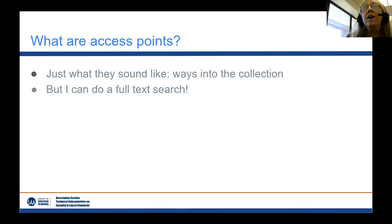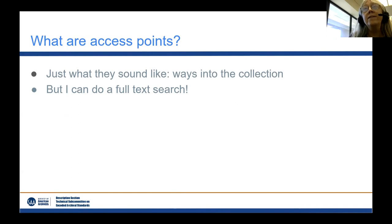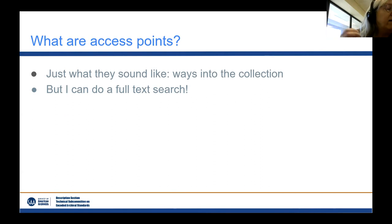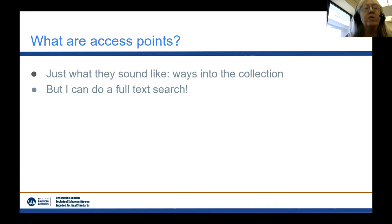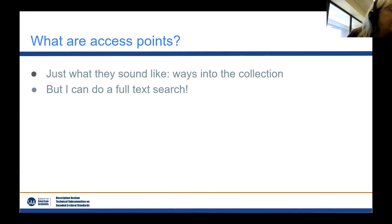So we're talking about controlled vocabularies and access points. What are access points? They are pretty much what they sound like — they are ways into the collection. When we think about access points, the classic way of thinking about it is subject: what is this collection about? But it's important to think more broadly than that, not just the aboutness of a collection.